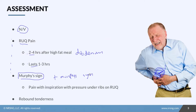We also perform rebound tenderness. This is when you press on the right upper quadrant and then release — the pain is actually worse when you release than with the initial pressure. So find out when the pain started, where it's located, how long it lasted, check Murphy's sign, and check for rebound tenderness in the right upper quadrant.